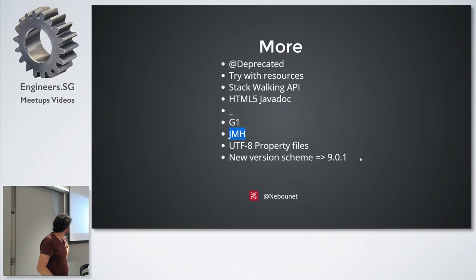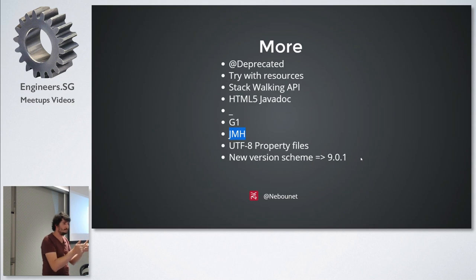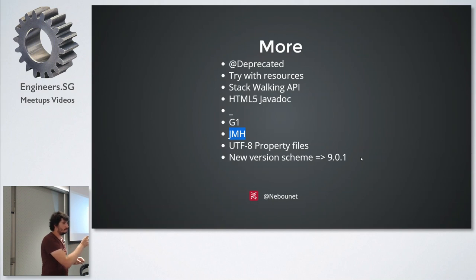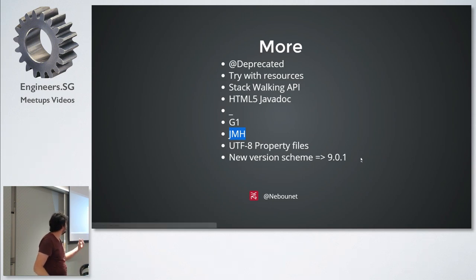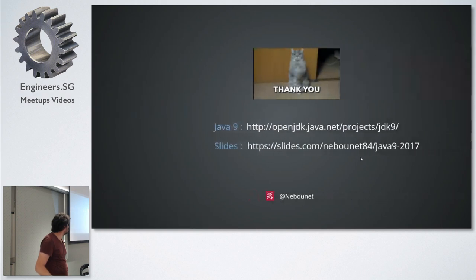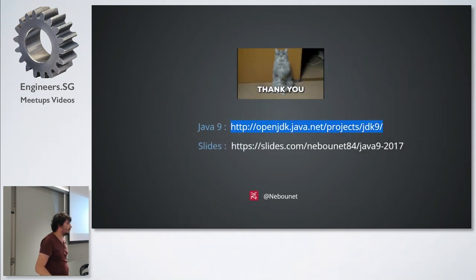There's also multi-release JAR, mainly for library maintainers. You can create the same class targeting a different JVM — so for instance you can write a specific version of a class for Java 9 while keeping the same class name. There are 91 JEPs in total — the link to the slides and all JEPs is available. Thank you all.